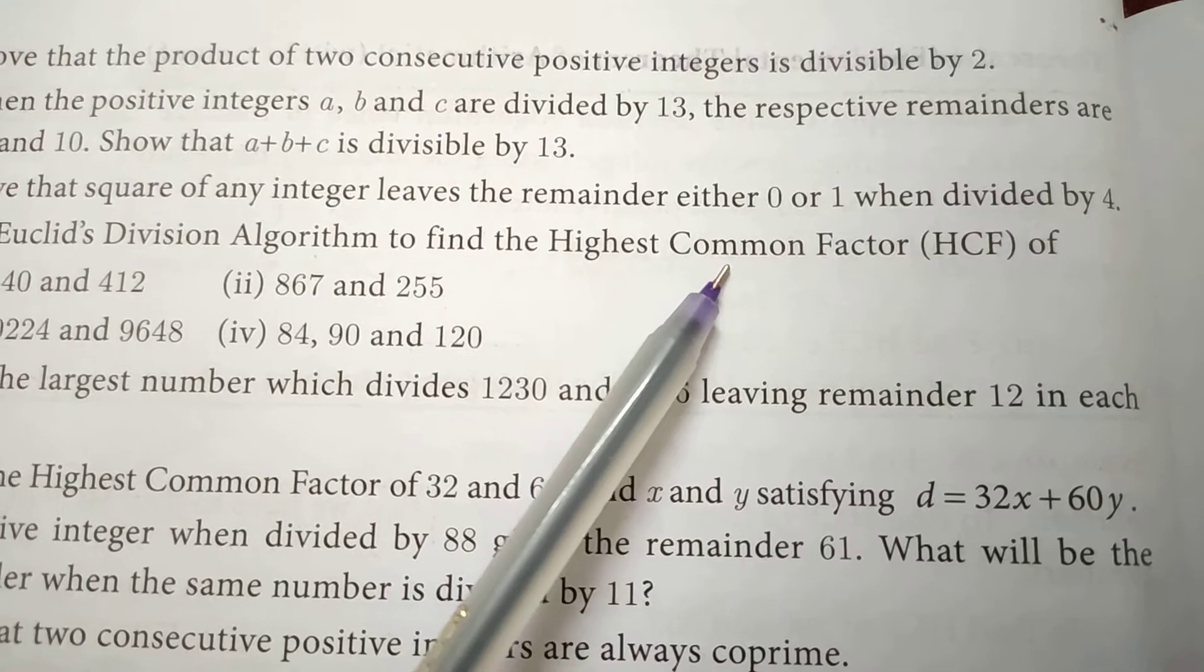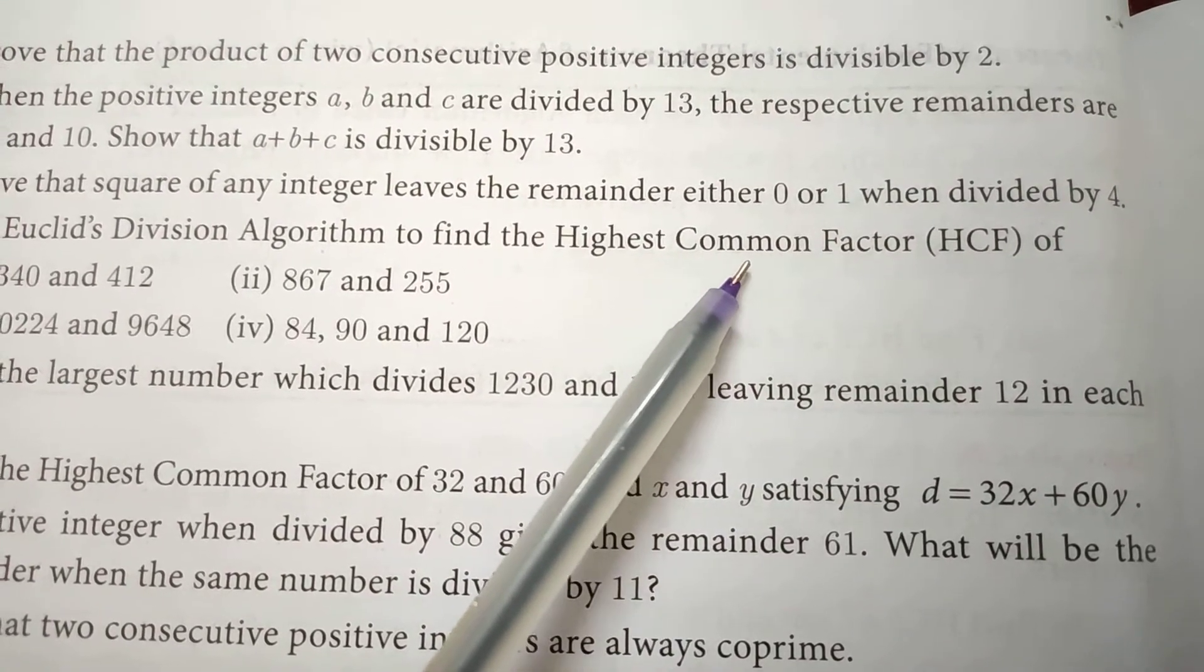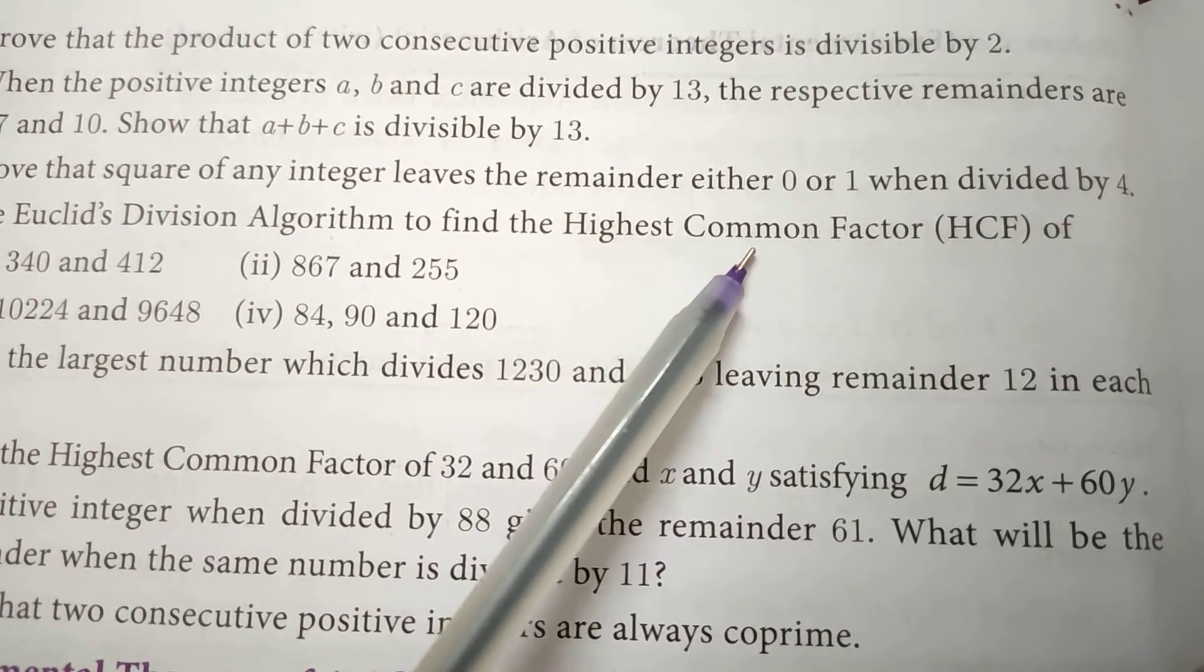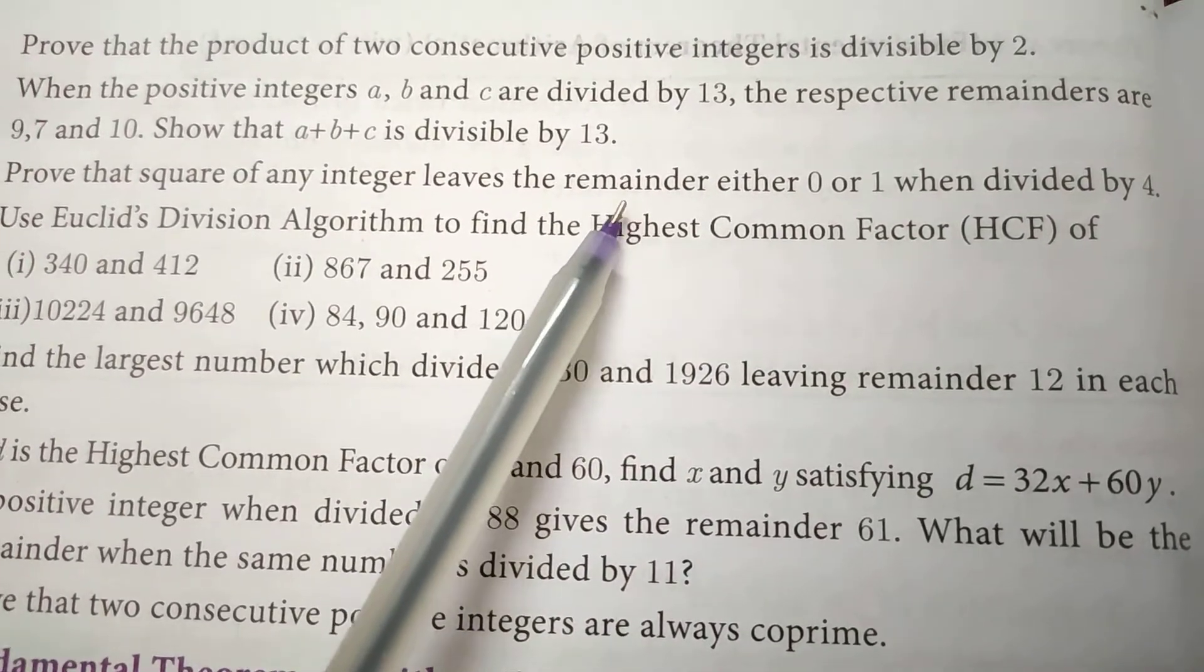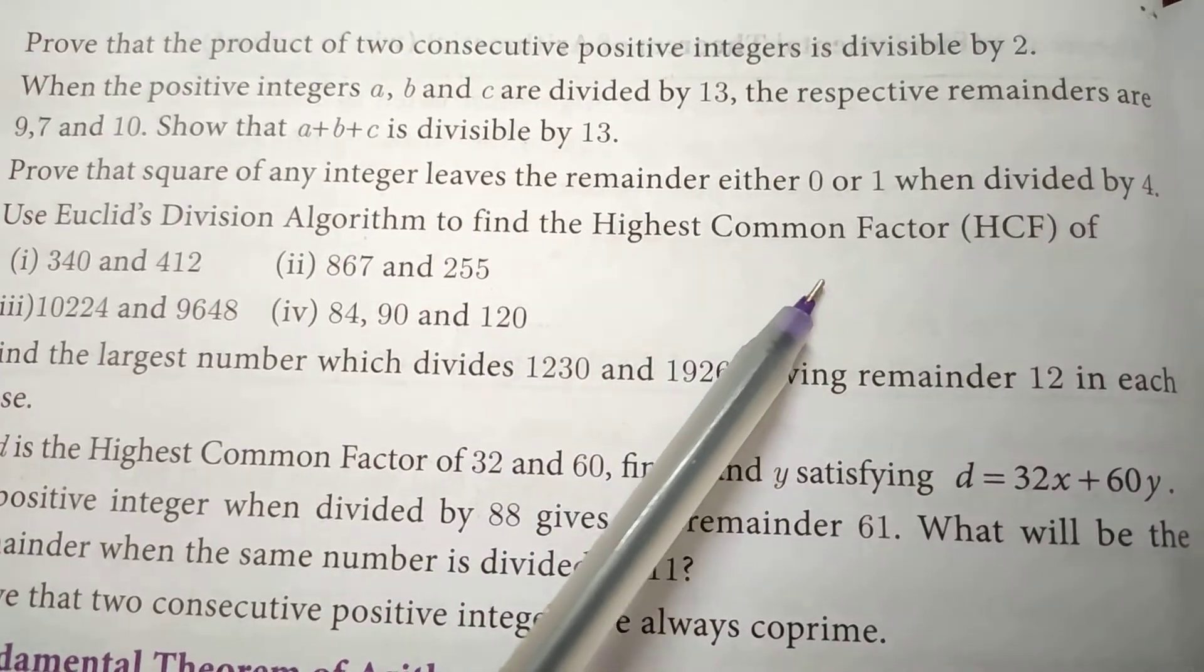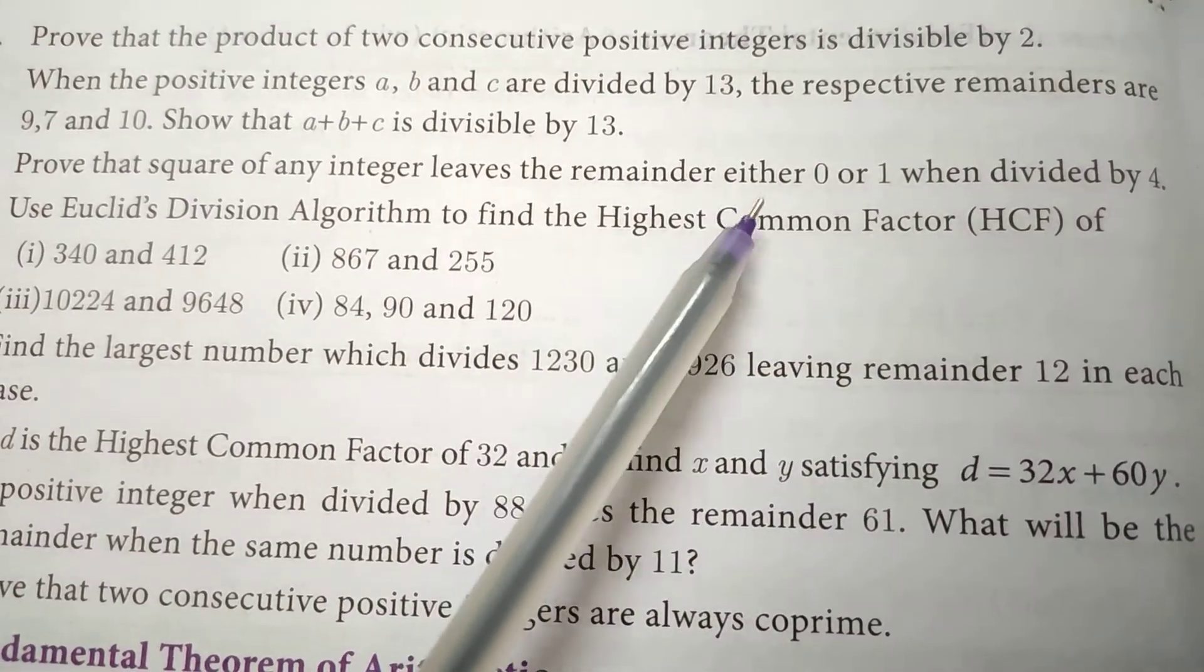For example, 2² = 4, which divided by 4 leaves remainder 0. If you take 3, then 3² = 9, which divided by 4 leaves remainder 1. So any number you take, when you square it and divide by 4, it should leave the remainder 0 or 1.